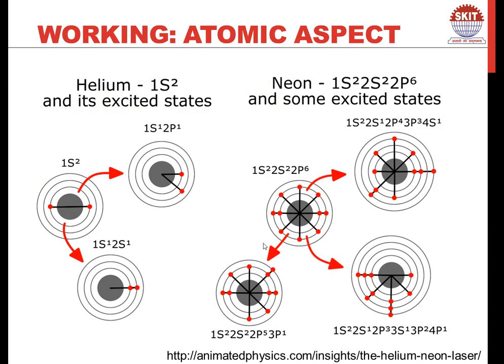If we consider the helium and neon atoms from an atomic perspective, helium is in its 1s² state and neon is in its 1s², 2s², 2p⁶ ground state, and these are basically the excited states of helium and neon atoms — 2 excited states of helium and 3 excited states of neon. From B.Tech students' perspective, this level of detail is not quite important; it is just to show that there are certain excited states accessible by these two atoms.